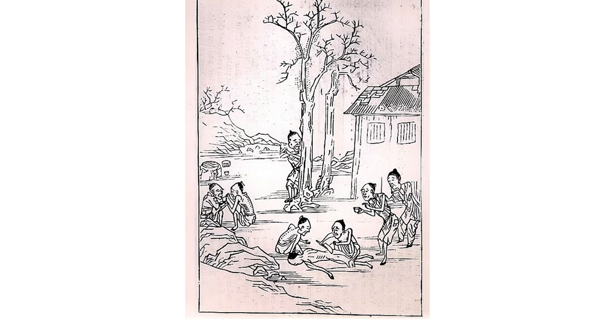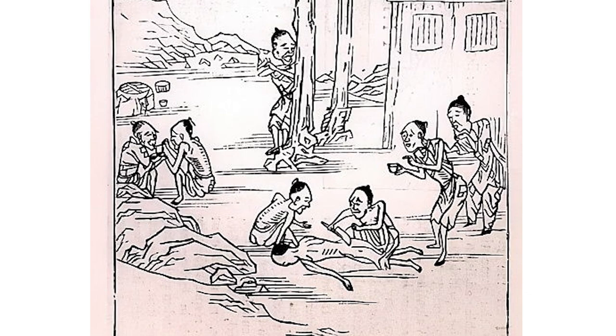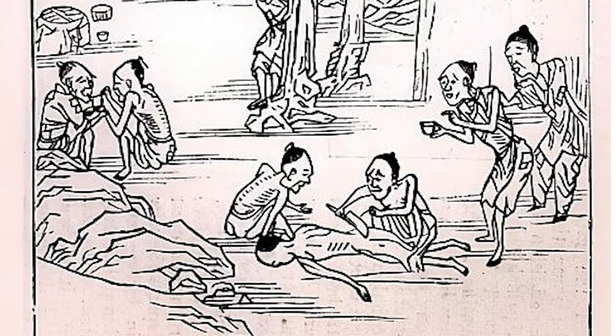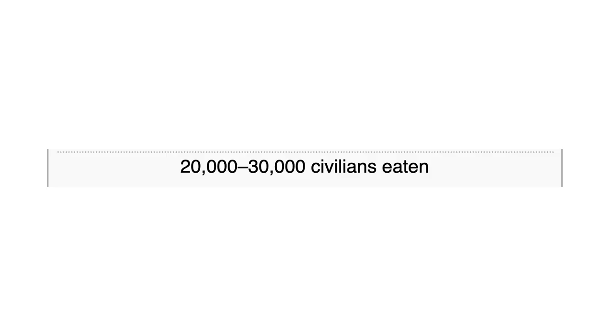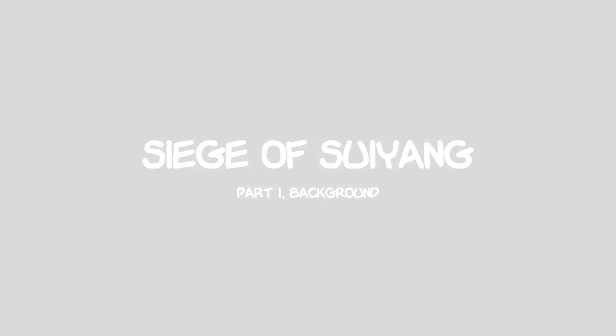Namely, when the food ran out by the order of the general, besieged soldiers started cannibalizing the civilians. In the end, 20,000 to 30,000 people were eaten by the soldiers defending the city. So here's the story of the Siege of Suyang.